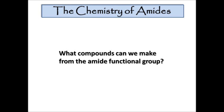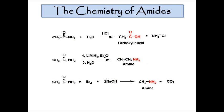What compounds can we make from the amide functional group? Starting from the same amide — just acetamide — we can treat it with a variety of different conditions: water under acidic conditions, lithium aluminum hydride, or bromine and sodium hydroxide. We can get either a carboxylic acid or an amine. In both the second and third cases we get an amine; however, in the last case you can see that we've lost one of our carbons as carbon dioxide.